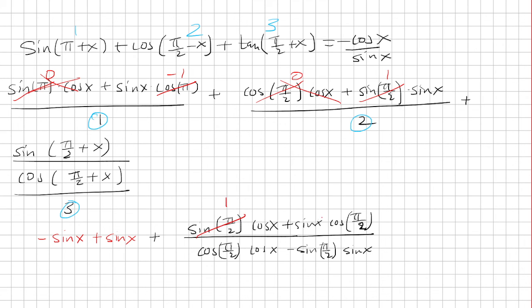Sine of pi over 2 is 1. Cosine of pi over 2 is 0, so this whole thing goes away. Cosine of pi over 2 is 0, this whole thing goes away. Sine of pi over 2 is 1.